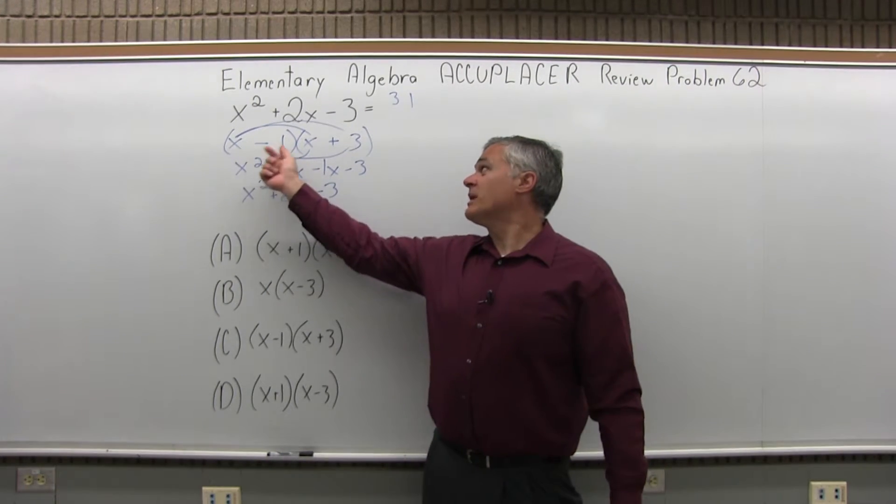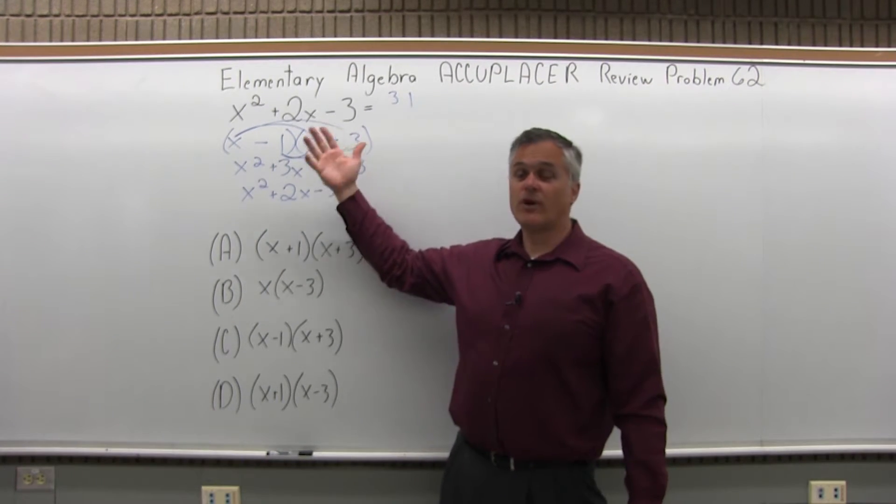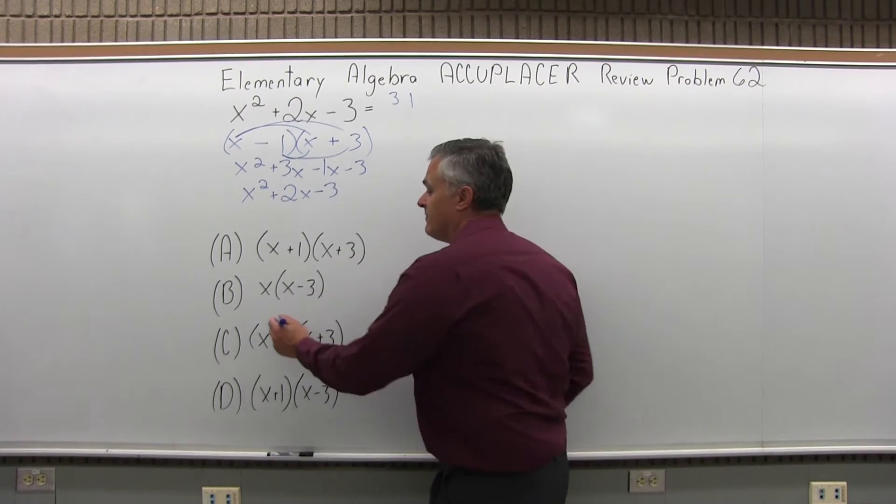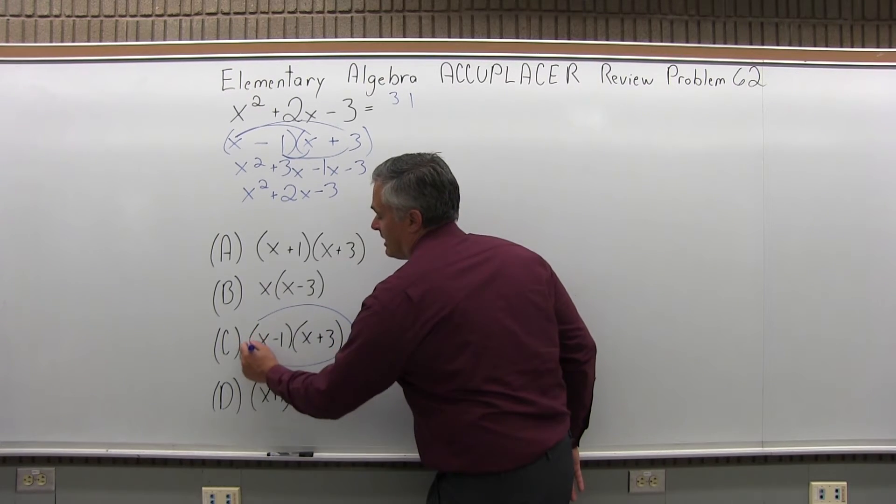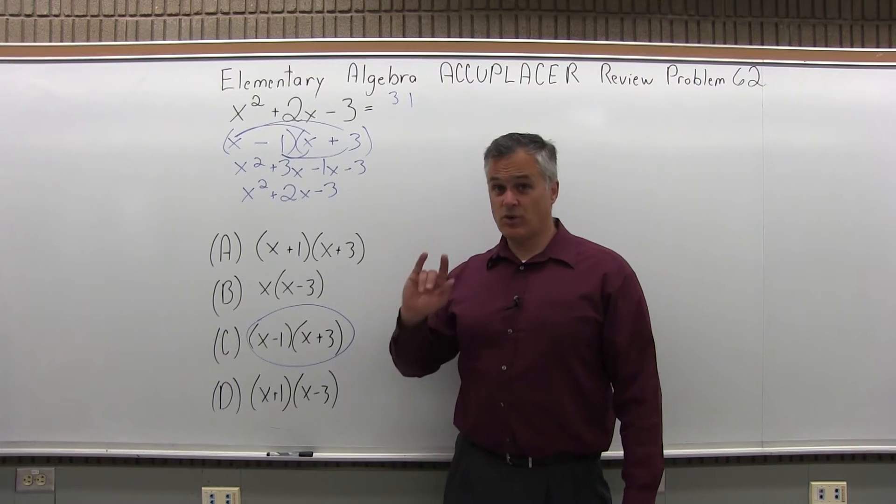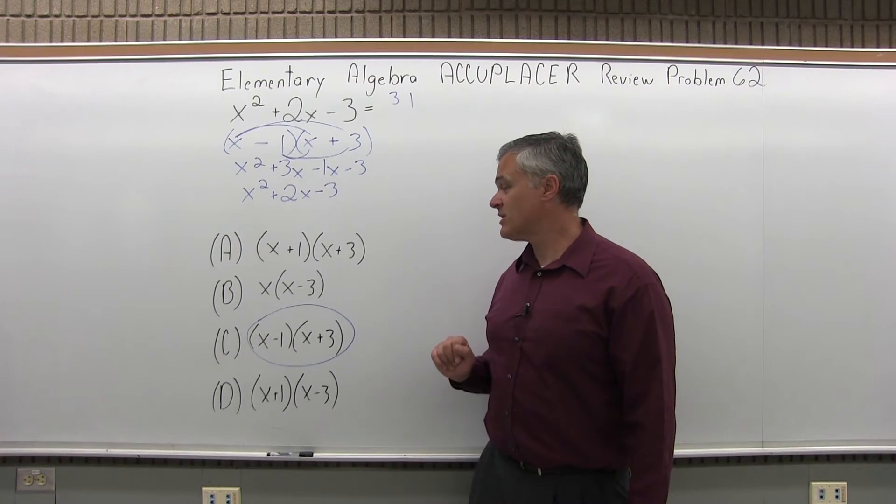So my factoring of x minus 1 times x plus 3, I'm very confident is correct. As I look through my list of options, it is option C. And I just want to mention that it can also be written x plus 3 times x minus 1. You can reverse the order of the parentheses, it's still the same answer.